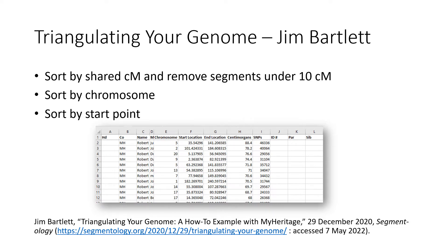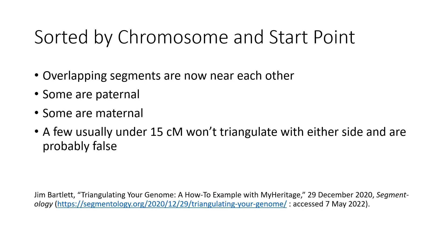Then he says to sort by chromosome and then by start point. The chromosomes are all mixed up when sorted by segment length — the longest is an 88 centimorgan segment, then 78 and so forth. After sorting by centimorgans and deleting segments under 10, I sorted by chromosome and then by start point. Once you sort it that way, the overlapping segments are now near each other.